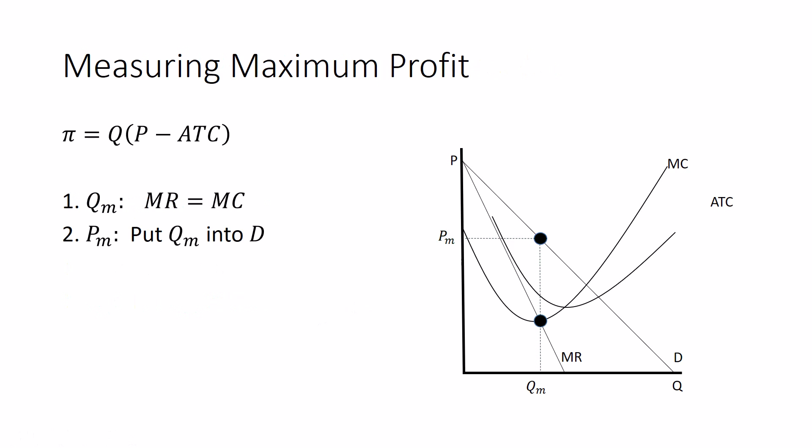But if we want to measure their success and measure how much profit they can make or see how much profit is possible in this market, there's two more steps for us. Step one, we need to figure out their average total cost. And so we're going to plug the monopolist quantity into the average total cost curve.